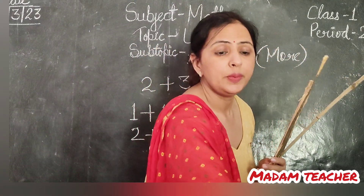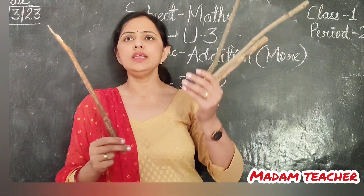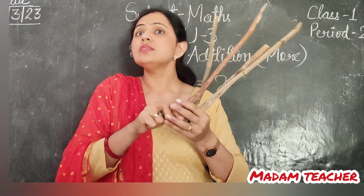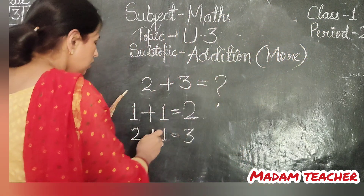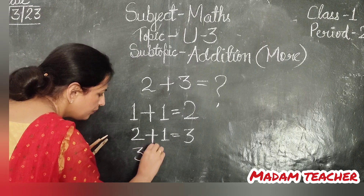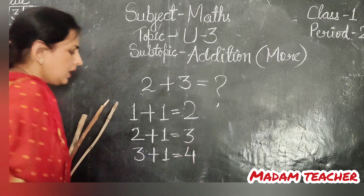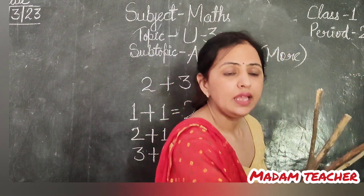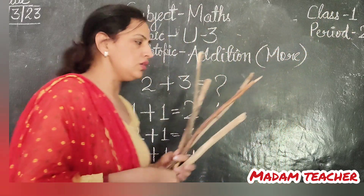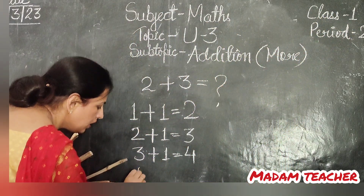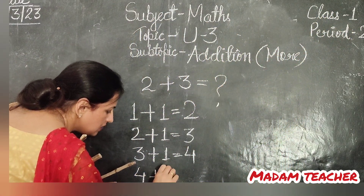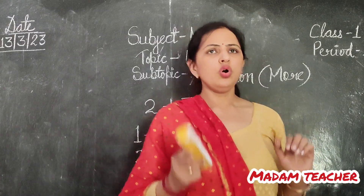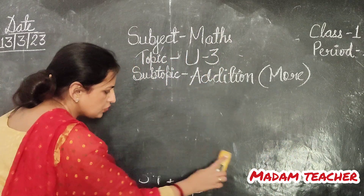Again, that boy picked one more stick. He added one more stick to the last 3. So, 3 plus 1 — 3 plus 1 — it becomes 4. Again, 4 plus 1 — one more added — so it is now 5. So now we understood.